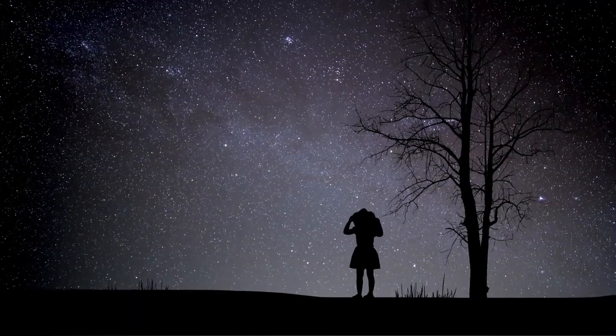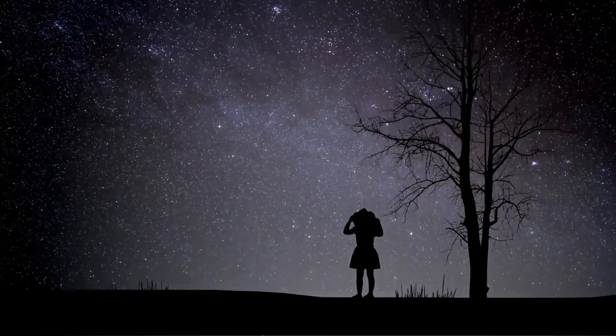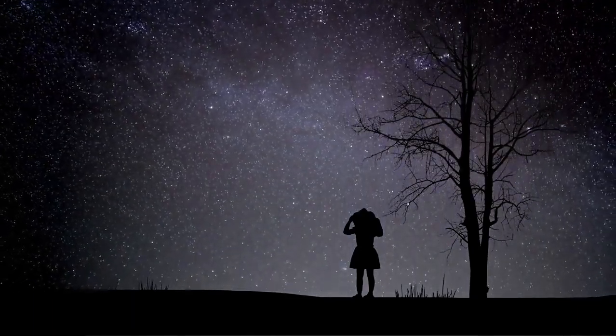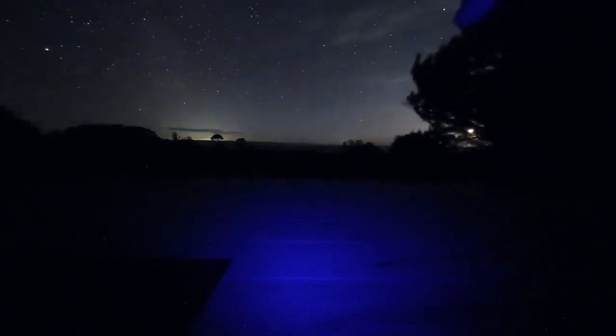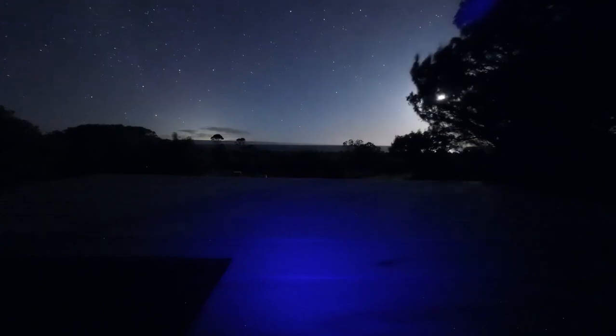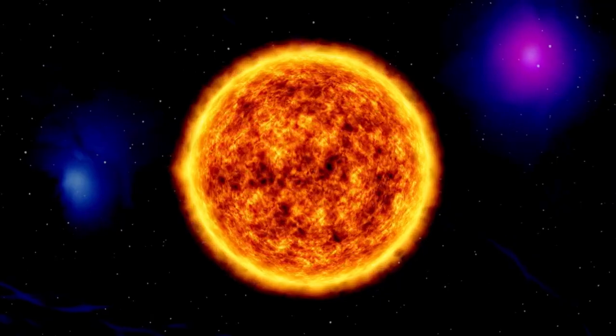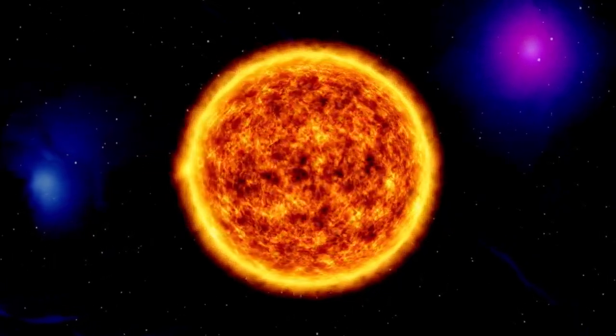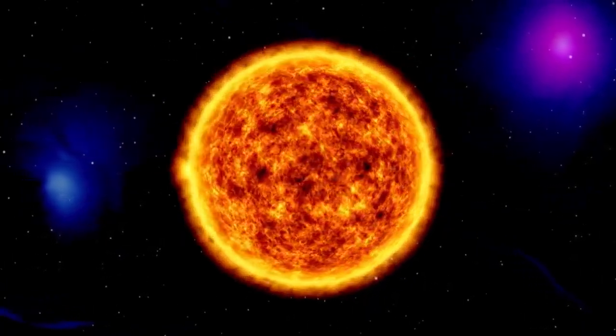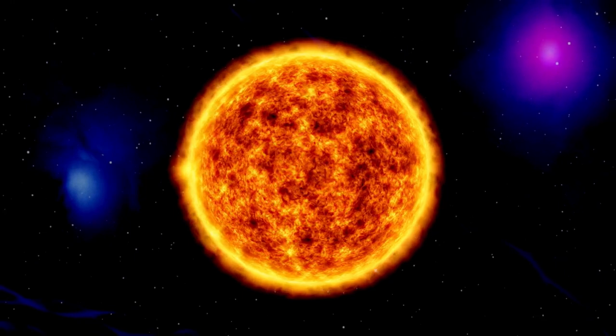Recently, this colossal red supergiant has exhibited signs of alarming instability, drawing the intense scrutiny of scientists and stargazers alike. Betelgeuse, located more than 640 light-years away from Earth, is a star of staggering proportions that dwarfs our sun in size. Its colossal nature and striking red hue make it a remarkable celestial object, captivating observers for generations.